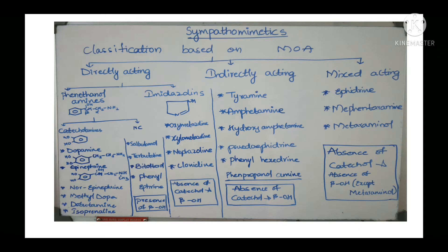Amphetamine inhibition of MAO and the norepinephrine transporter increases norepinephrine concentration in the synapse, which then acts on receptors. So indirectly acting drugs increase norepinephrine by various mechanisms rather than directly acting on receptors. Examples are hydroxyamphetamine, pseudoephedrine, and phenylhexedrine. These drugs contain a common structure: phenylpropanolamine. It is like phenethylamine with one extra carbon added, and has a beta-hydroxy group but no catechol ring.